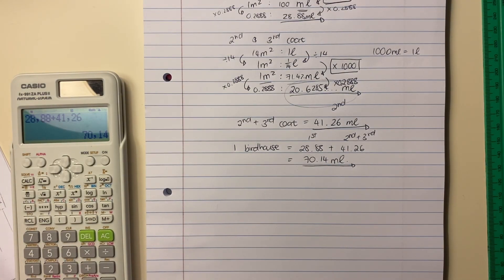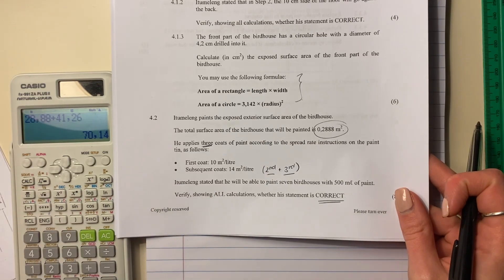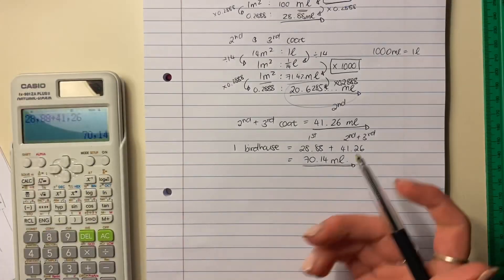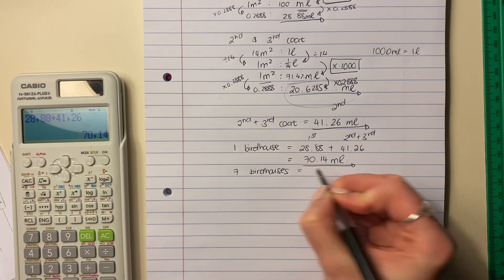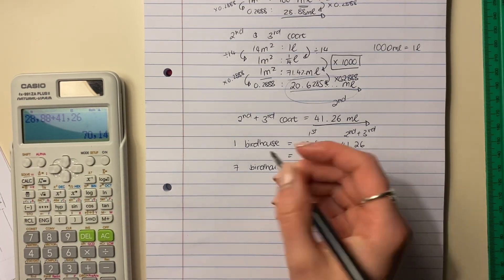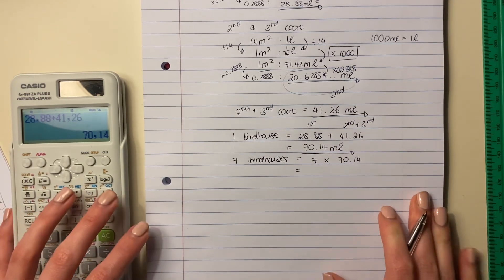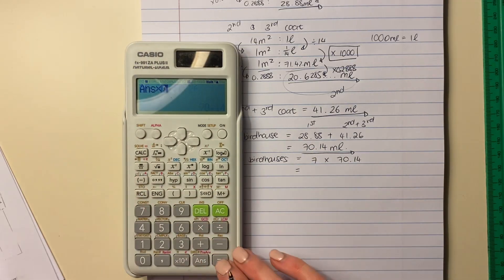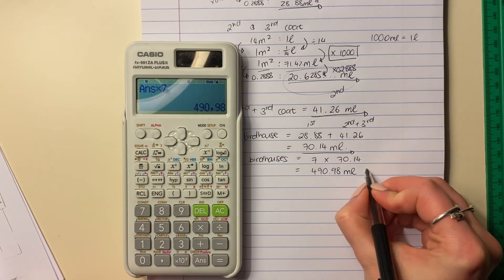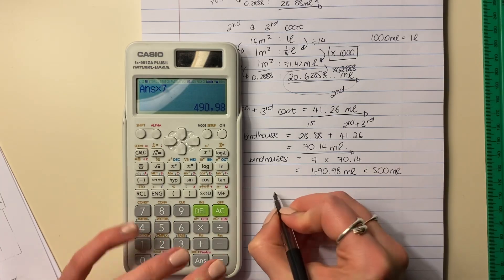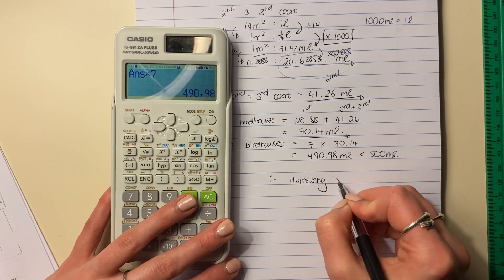Now, let's go back to the question and see if we're finished. It says Itumaleng stated that he will be able to paint seven birdhouses with 500 milliliters of paint. Well, let's go and take this and say, how many milliliters would it take to paint with three coats seven birdhouses? Well, it'll be seven times the answer we've just got, because that's for one. Now we want for seven. So times it by seven, and that is 490.98 milliliters, which is less than 500 milliliters. Therefore, Itumaleng is right.